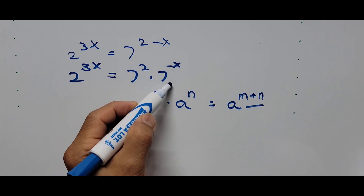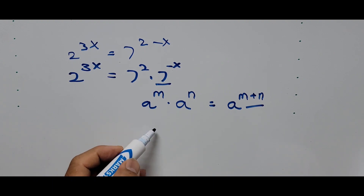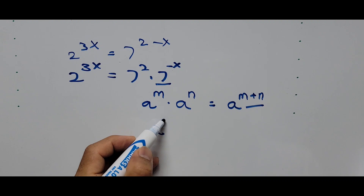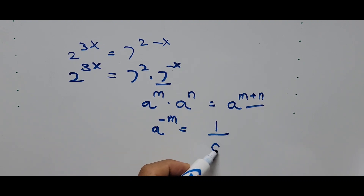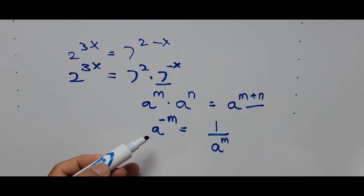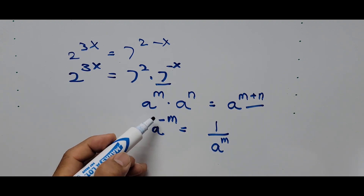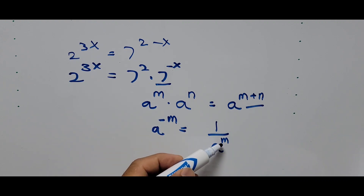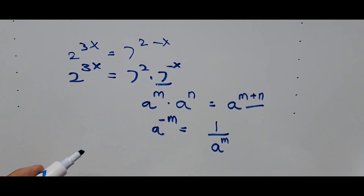To simplify, since we have a negative exponent, we use the negative exponent rule: a raised to negative m equals 1 over a raised to positive m. This means we move the term to the denominator and reverse the sign of the exponent from negative to positive.